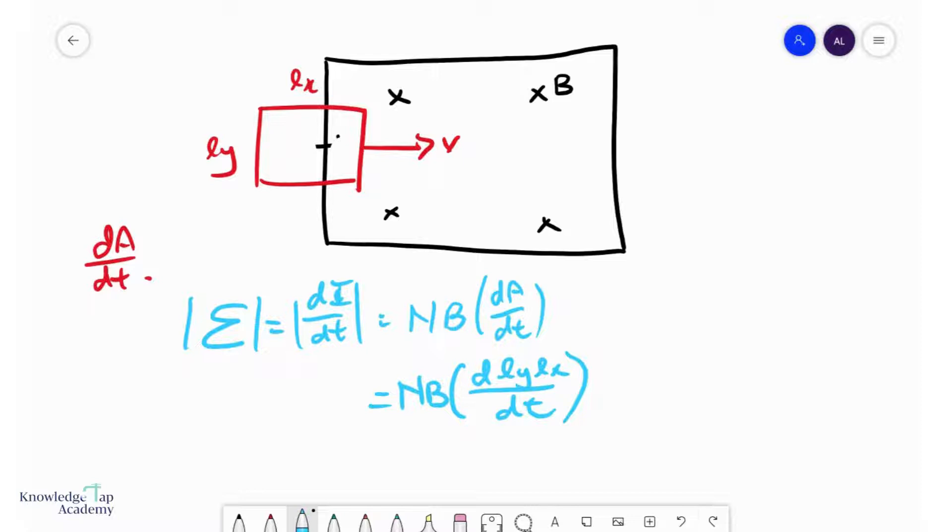We're simply breaking the area down. And as this coil enters, Ly is always going to be the same. It is the Lx that is constantly changing. So, pull out Ly, and then you have L*dLx/dt.